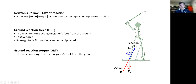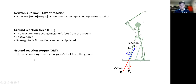The ground reaction torque is the reaction torque acting on the golfer's foot from the ground. When you apply a torque to the ground, the ground will also exert a torque to your foot at the same time. This is a passive torque, and the magnitude and direction can be manipulated depending on how you interact with the ground.